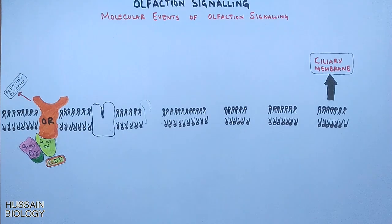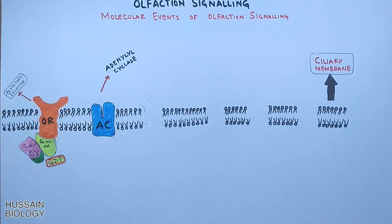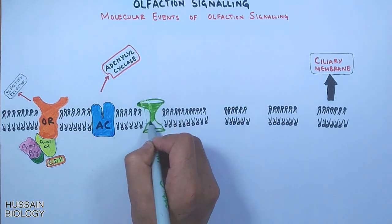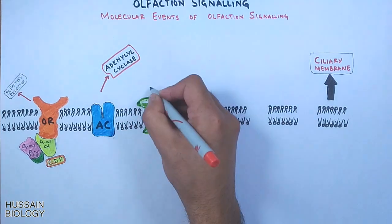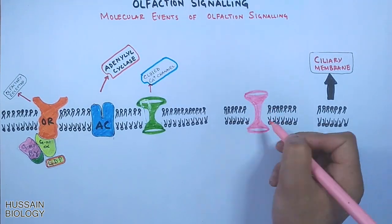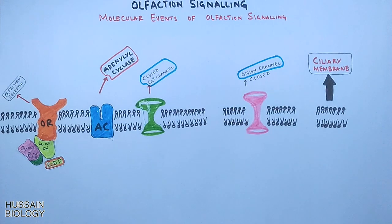To the right we have adenyl cyclase as shown in the diagram, and this is also inactive. Furthermore, we have ion channels. The ciliary membrane has closed calcium channels and also closed anion channels, or chloride channels, present in the ciliary membrane shown in pink color.